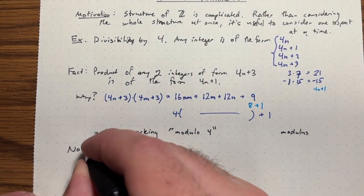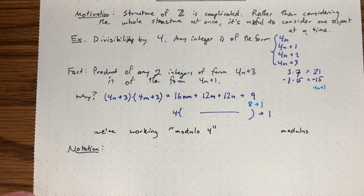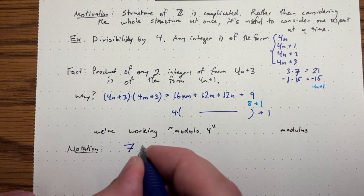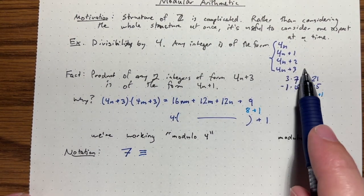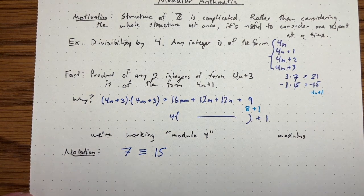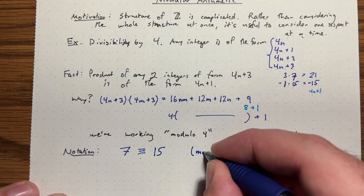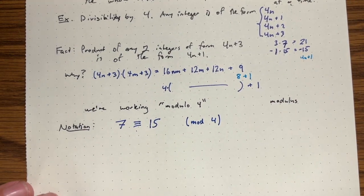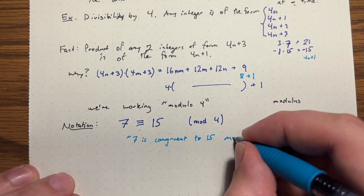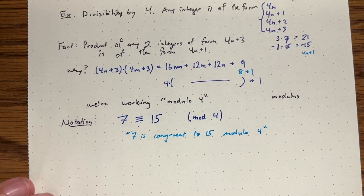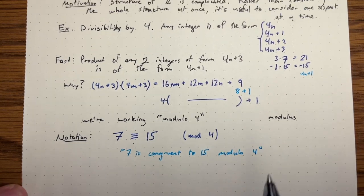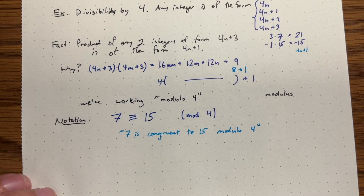Let's introduce a notation due to Gauss. We're going to call two numbers congruent using a special equal sign. For example, 7 and 15 are basically the same if we look modulo 4 — they're both of the form 4N+3, both 3 more than a multiple of 4. We say 7 is congruent to 15 modulo 4, written with this triple-bar symbol and '(mod 4)' in parentheses after the equation.